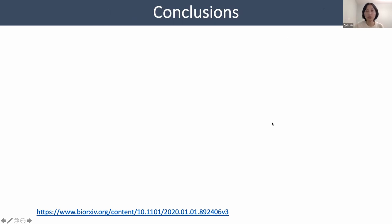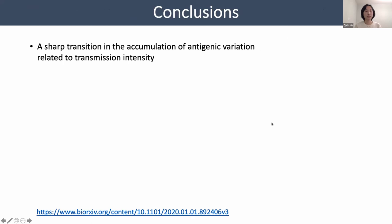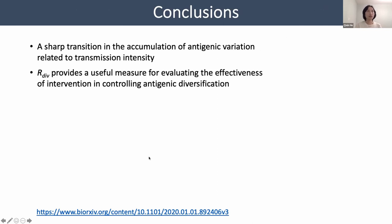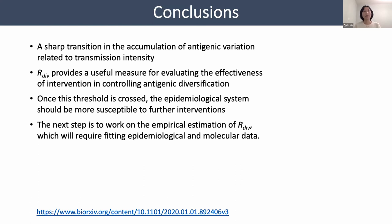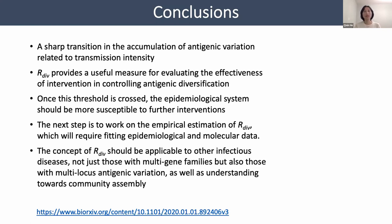To conclude: we observe a sharp transition in the accumulation of antigenic variation that is related to transmission intensity. The R_div measure provides a useful value for evaluating the effectiveness of interventions in controlling antigenic diversification. Once this threshold is crossed, the epidemiological system should be more susceptible to further interventions because the pool of genes is relatively closed. The next step is to have empirical estimation of R_div, requiring fitting of epidemiological and molecular data. In general, this concept should be applicable to other infectious diseases, especially those with multi-gene or multi-locus antigenic variation families.